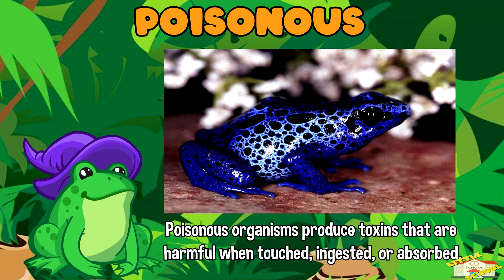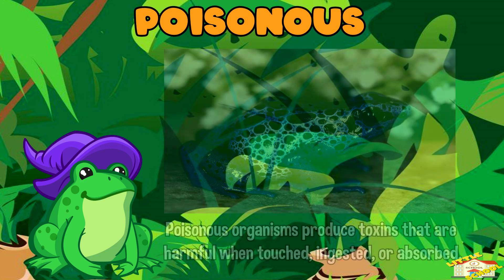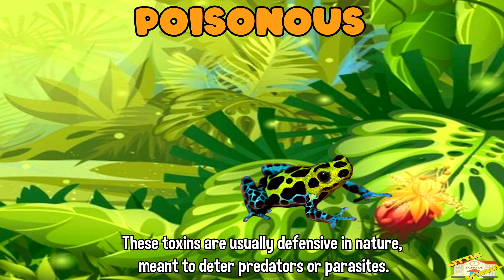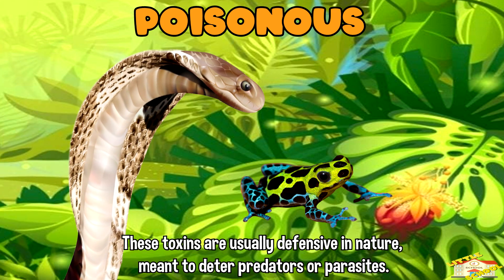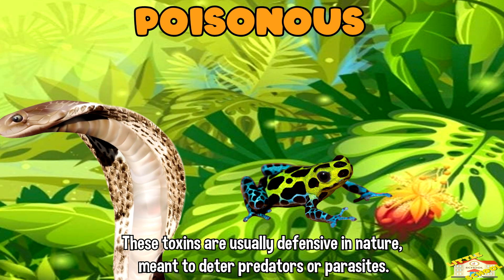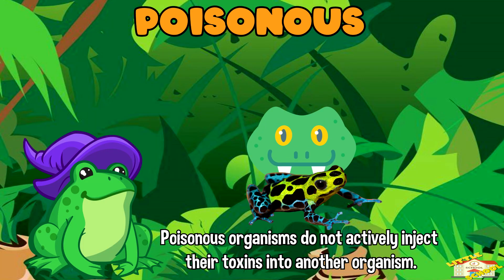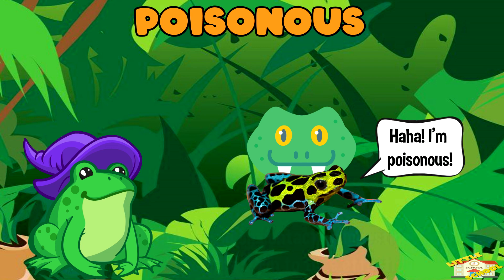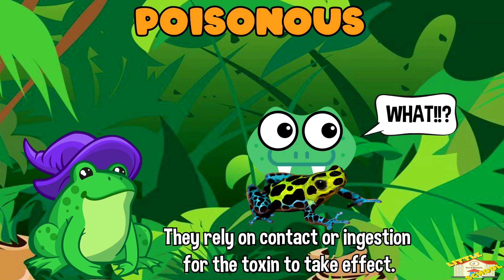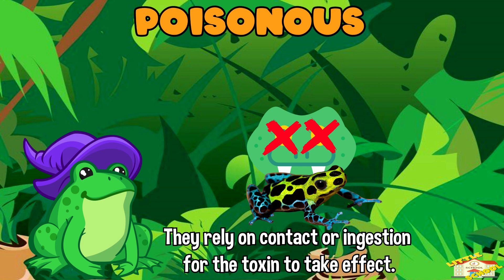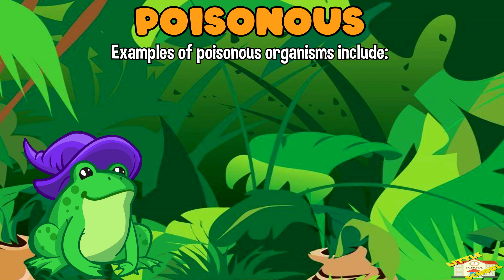Poisonous organisms, on the other hand, produce toxins that are harmful when touched, ingested, or absorbed. These toxins are usually defensive in nature, meant to deter predators or parasites. Poisonous organisms do not actively inject their toxins but rely on contact or ingestion for the toxin to take effect. Examples of poisonous organisms include certain plants, frogs, mushrooms, and some insects.